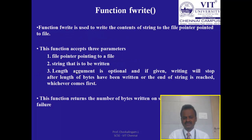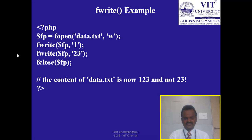The fwrite function writes the content of a string to a file. It accepts three parameters: the file pointer, the string to be written, and an optional length argument. If length is given, writing stops after that many bytes have been written or the end of the string is reached, whichever comes first. It returns the number of bytes written on success or false on failure. In the example, I open data.txt in write mode, then write 'one' and then 'two, three' on the next line. If there was previous content in data.txt, it will be erased.